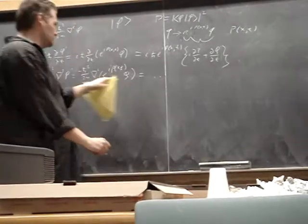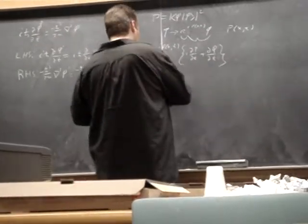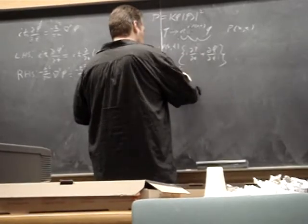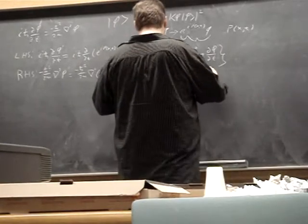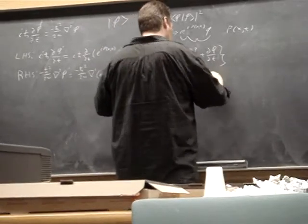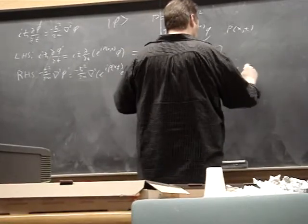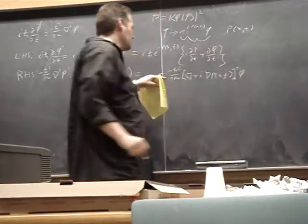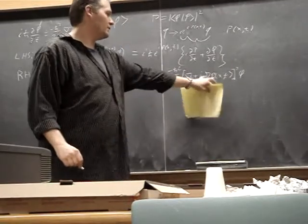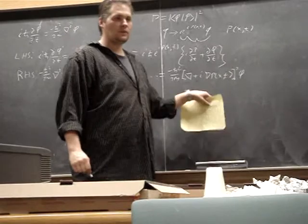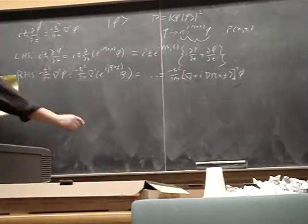And after doing a whole bunch of product rules, you end up with this big thing that's negative h-bar squared over 2m times del plus i del of our smooth function p squared times psi. So then putting them back together,